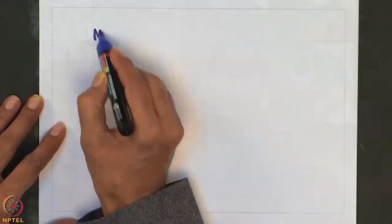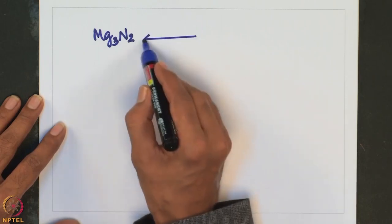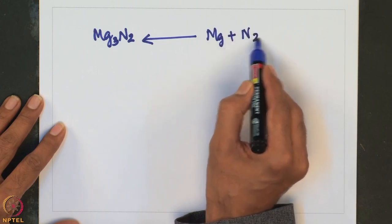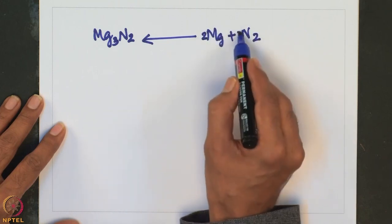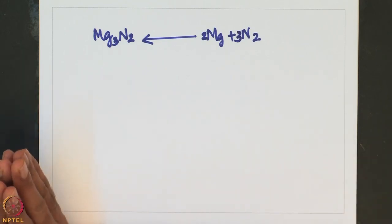Turning to reactions with other elements such as nitrogen: magnesium burns in nitrogen to form a greenish-yellow compound with composition Mg3N2, which can be conveniently prepared by burning magnesium under nitrogen. This compound has been used as a catalyst for preparing cubic boron nitride.